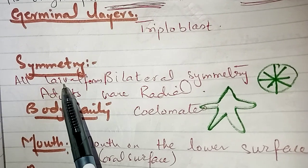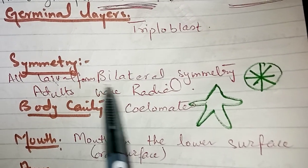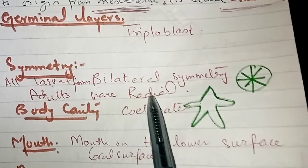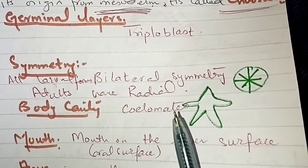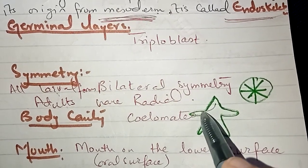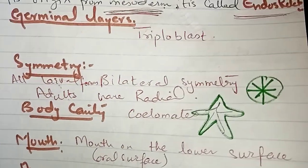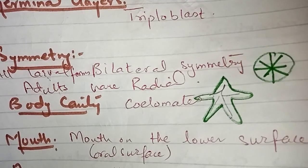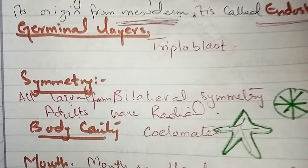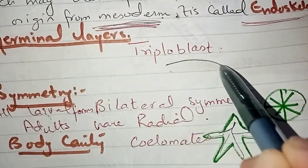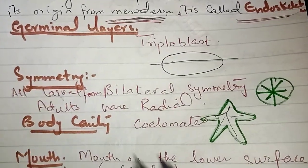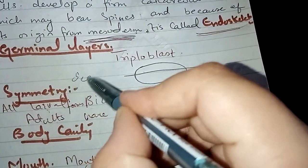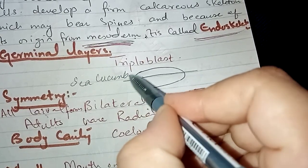As far as larval forms are concerned, they are bilateral, but as far as adult forms are concerned — like sea urchin and starfish — they show radial symmetry. There are 5 planes where you can cut them; the number of arms is 5. However, the sea cucumber is the one member that retains bilateral symmetry among the adults. So overall, most adult members show radial symmetry.